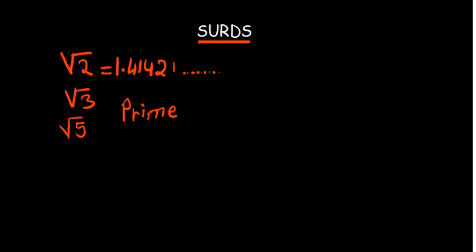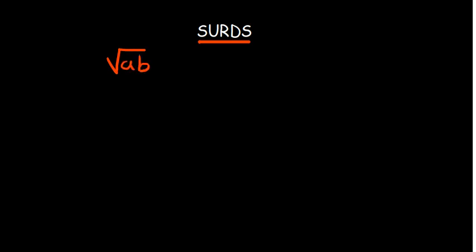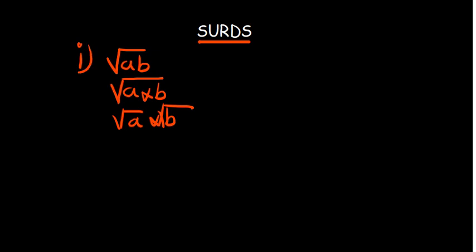The first rule is: when you are given the square root of a multiplied by b, you can break it down so that it equals the square root of a multiplied by the square root of b — they are the same thing. We will look at examples to help us understand these laws.